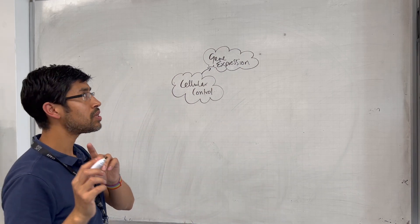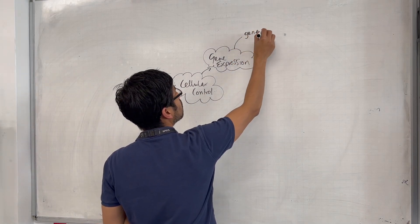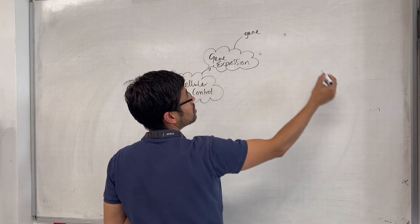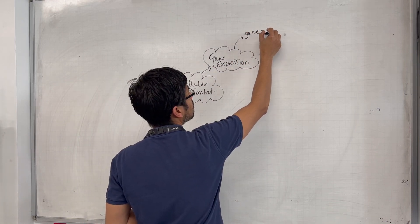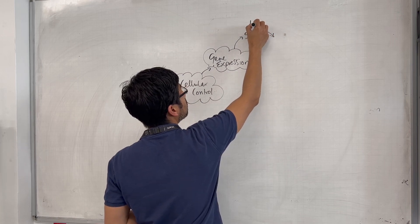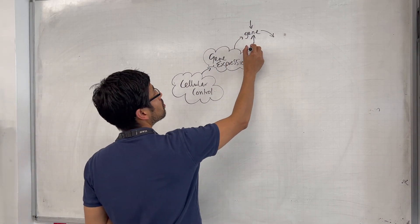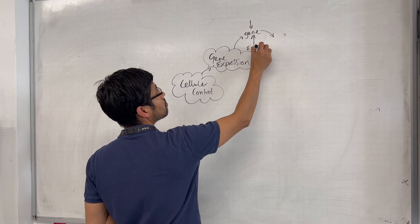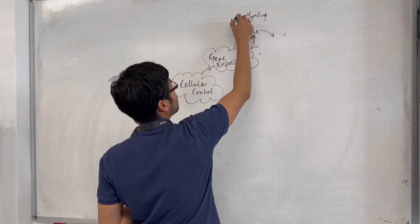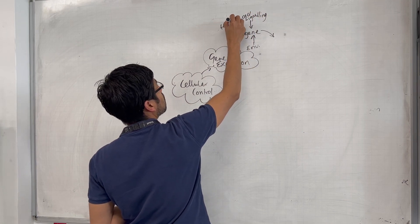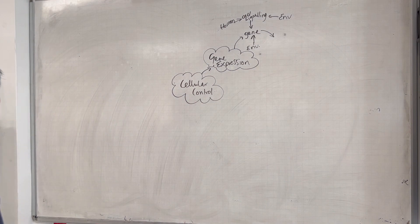Gene expression is about the gene to protein story. We have a gene, and there are a number of things which might signal towards that gene. We could have environmental stimulus or cell signalling happening. Ultimately it's cell signalling, and that could be caused by a hormone or by environmental factors.